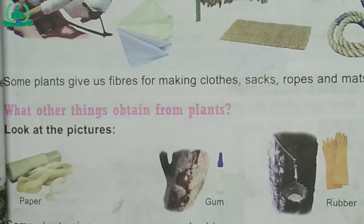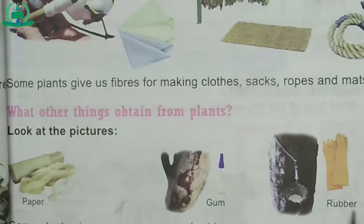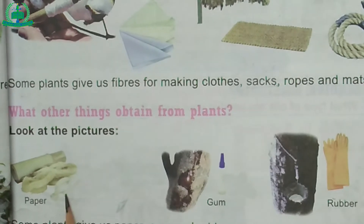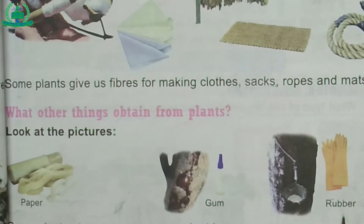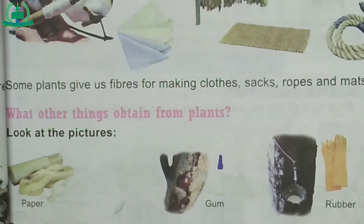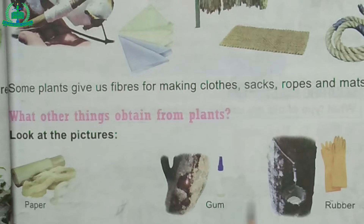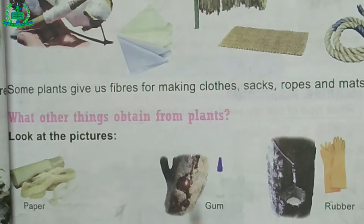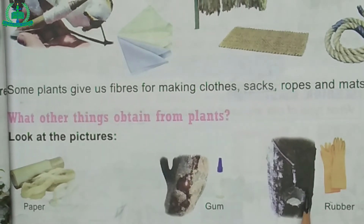What other things are obtained from plants? Some plants give us paper, gum and rubber. Paper, gum and rubber are very important in our daily life. We use them to make various useful things.